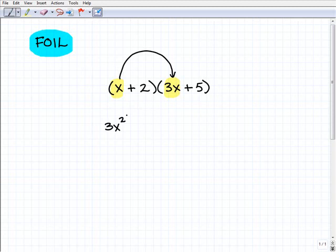Now, O is outer. So the outer is this x and that 5. You draw a little line this way. You don't have to draw the lines. Matter of fact, I suggest that you don't. I'm simply drawing the lines here just to teach you this. So we have x times 5, and of course is going to be 5x.